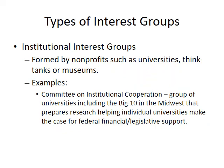Institutional interest groups are formed by nonprofits such as universities, think tanks, or museums. An example is the Committee on Industrial Cooperation — a group of universities including the Big Ten and Midwest schools — that prepares research helping individual universities make the case for federal financial and legislative support.